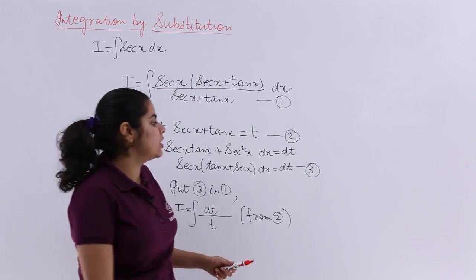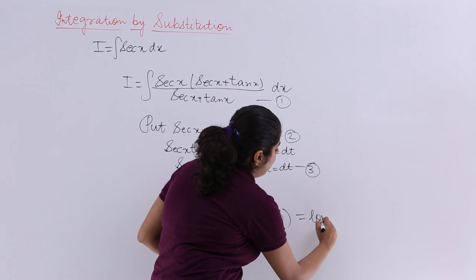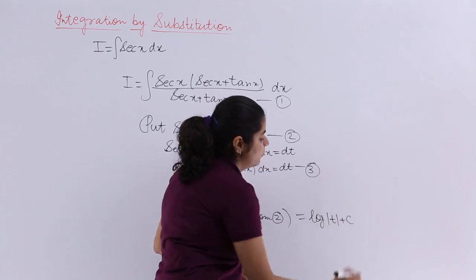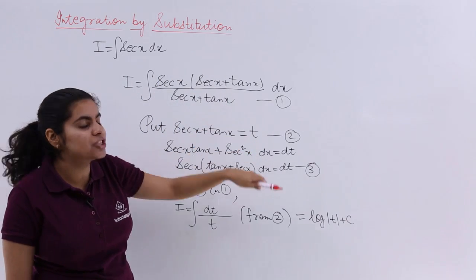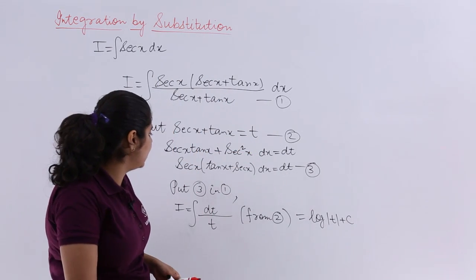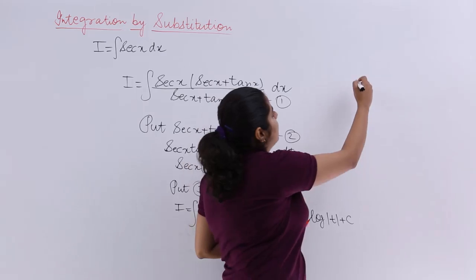Now, what is dt over t's integration? It is log mod t plus c. And what was t? From equation 2, t was sec(x) plus tan(x). So it is sec(x) plus tan(x).